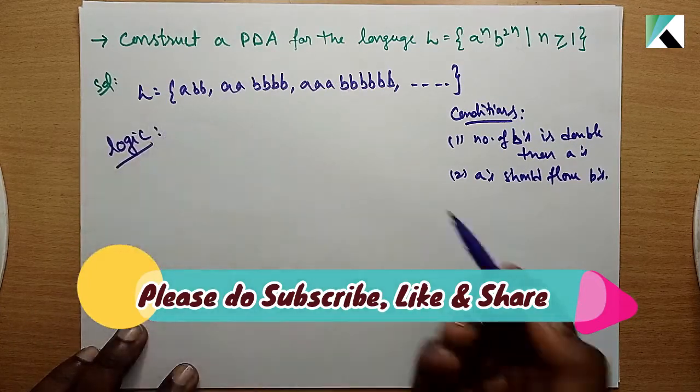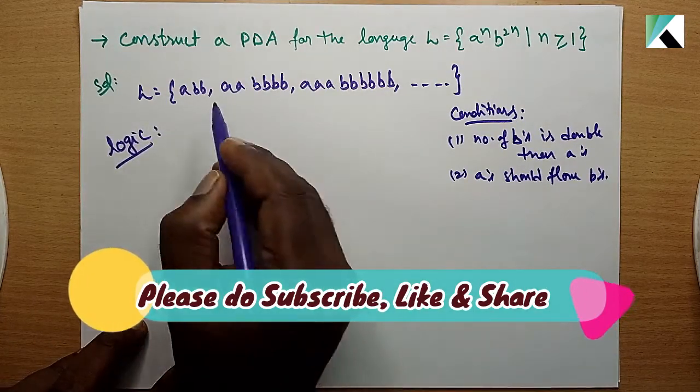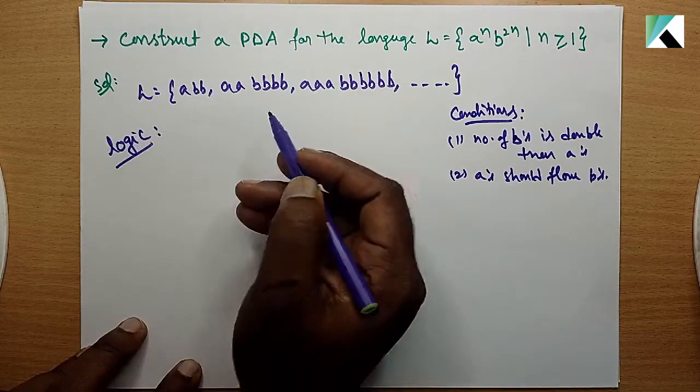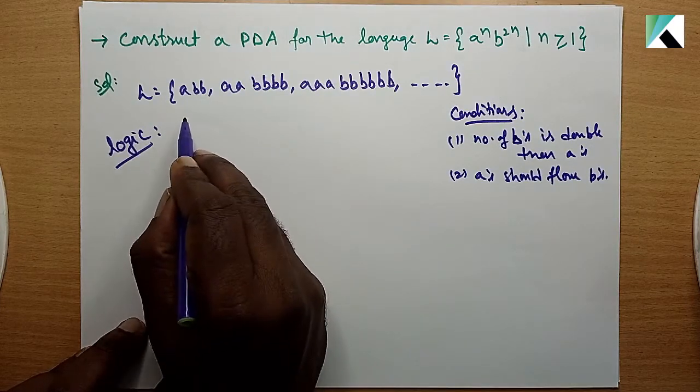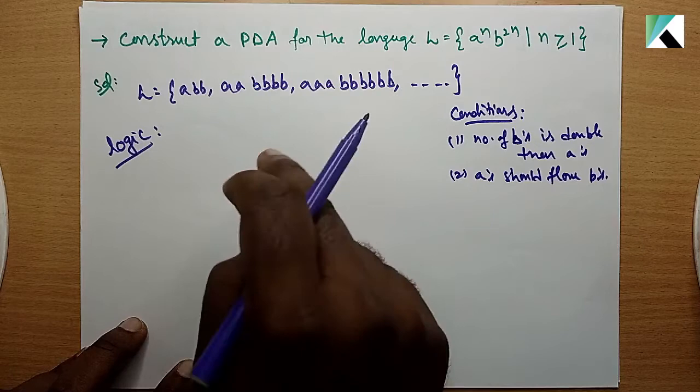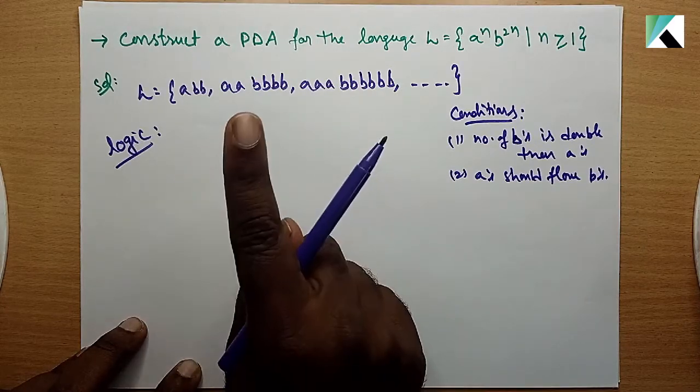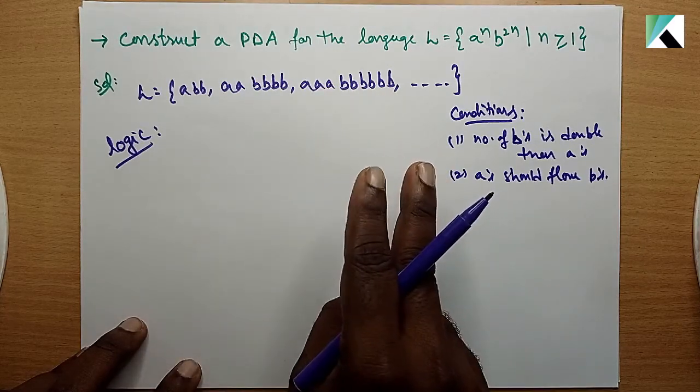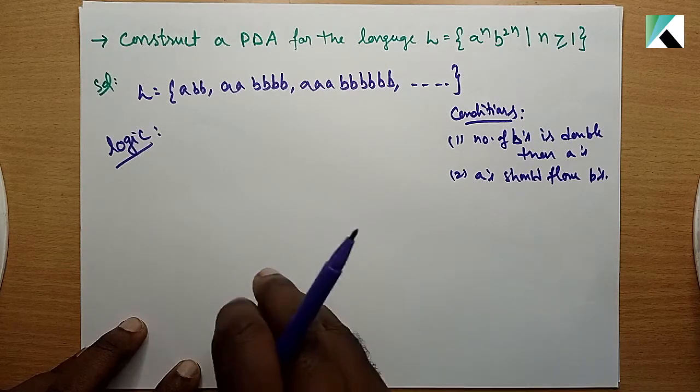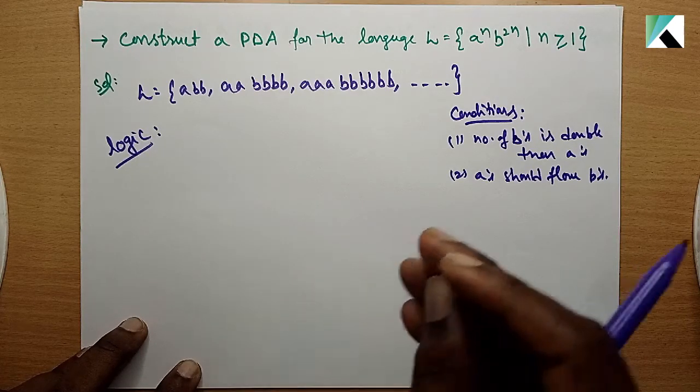Logic is very simple. For a single a, push two b's onto the stack. Then for each b that comes, pop one symbol from the stack. So each and every b will cancel one a from the stack.